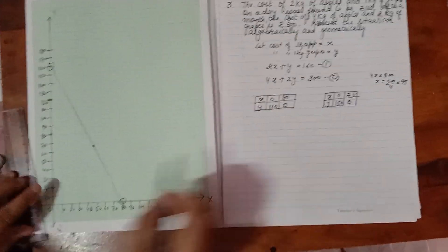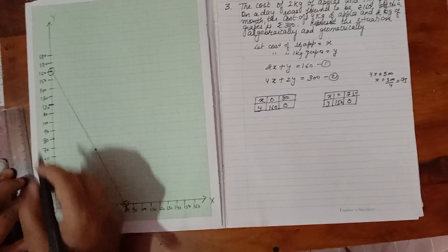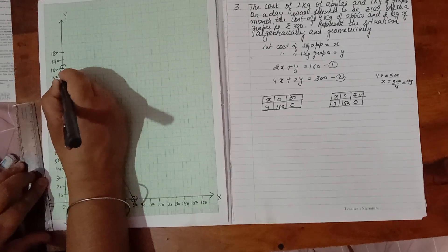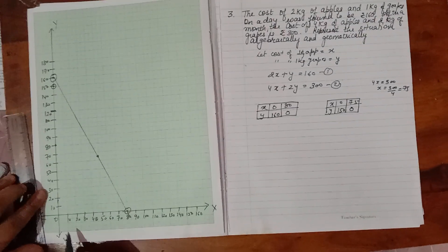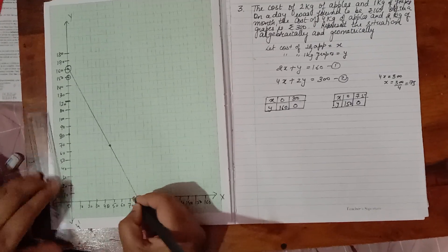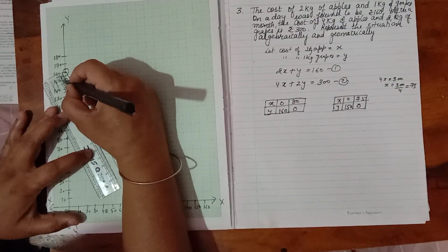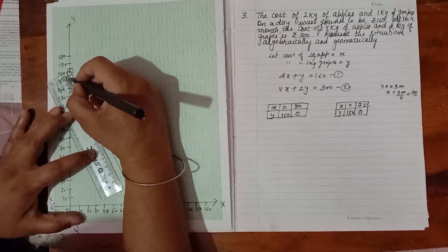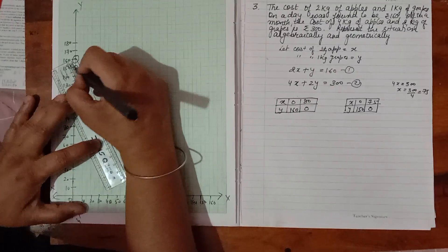Then for the second equation, when X is 0, Y is 150, one point will come here. When Y is 0, X is 75, between 70 and 80 you have to take the point. Then again you have to join it carefully with the help of a scale and pencil.